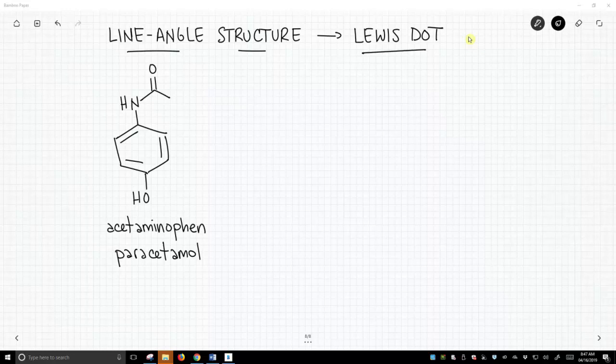We have on the screen a molecule. This is a known drug, acetaminophen. Outside the United States, most countries refer to this as paracetamol. We've shown it in the line-angle structure. So how do we convert this to a Lewis dot structure? This is an important skill because line-angle structures leave out a lot of details, and it's important that you're able to fill those details back in.